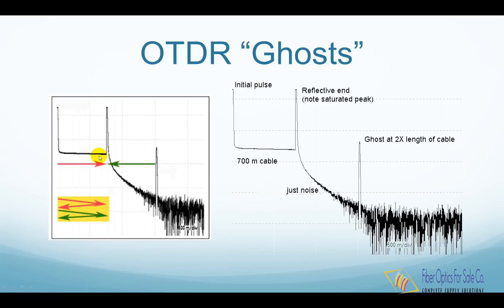When the OTDR sends the test pulse down the cable, the big reflection from the far end comes back to the OTDR and shows up on the trace as an overloaded reflection, then is reflected from the OTDR interface back down the cable for a second trip, effectively becoming a second test pulse, which is reflected back from the far end yet again and recorded as a second trace. If the reflections are big enough, this process can go on three or four times, each time producing a ghost event on the OTDR trace.